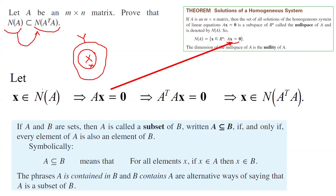So we've shown that if we take a random element x from the null space of A, that element satisfies the condition for belonging to the null space of A-transpose times A. The proof is complete.